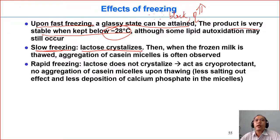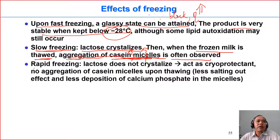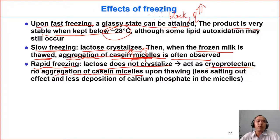If we do slow freezing, lactose may crystallize as already described. When this frozen milk is thawed in the next step, aggregation of casein micelles may occur. During slow freezing, there is time for many changes: the concentration of salt and ionic strength in the liquid water becomes very high, which influences proteins, especially casein, causing the casein micelles to come together and form aggregates. With rapid freezing, lactose does not crystallize and instead acts as a cryoprotectant — it protects the texture of milk and prevents aggregation of casein micelles.